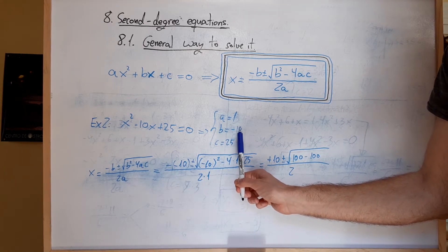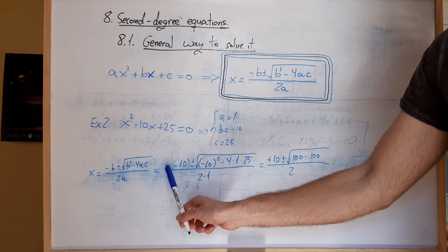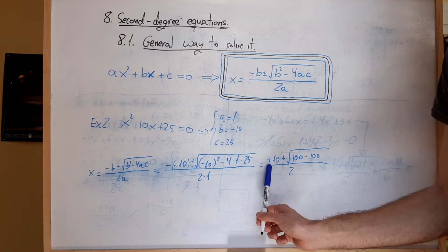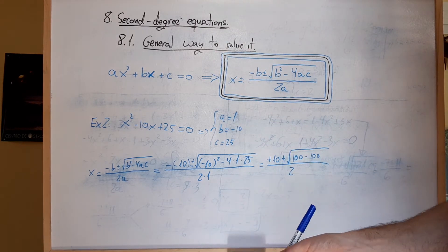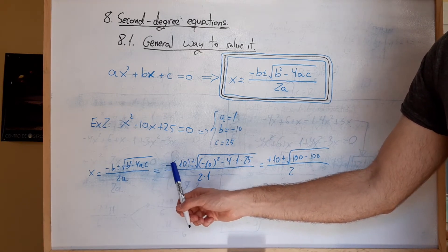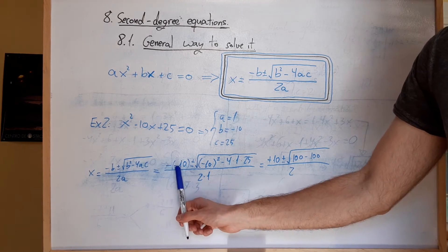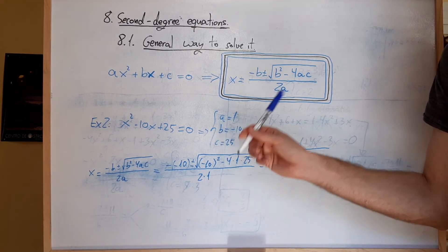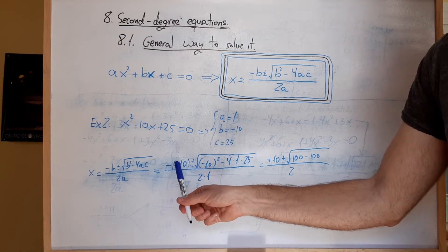¿Cuánto vale b? Pues b vale menos 10. Entonces aquí tenemos que poner menos 10, pero había un menos delante. Entonces este menos con este menos se nos va a convertir en más — sí, pero lo hacemos luego para que no se nos confundan los signos. En este caso, daos cuenta de que hace falta poner dos veces menos: el primer menos es por el menos de la fórmula, y el segundo menos es porque pertenece a la b, porque b es menos 10, no es 10. Por eso hace falta poner aquí menos y otra vez menos.